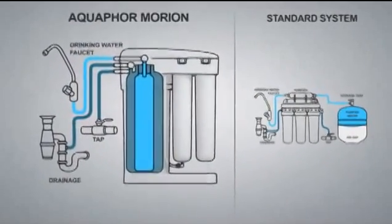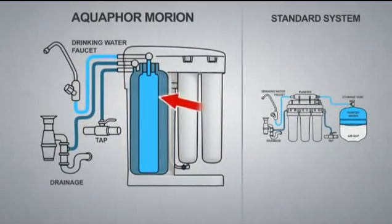Aquaphor Morion's tank is separated by an elastic wall into two sections. The first one is connected through the automation unit to your source water. The other is for storing your purified water.